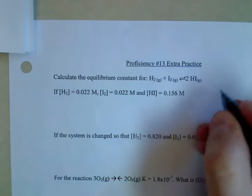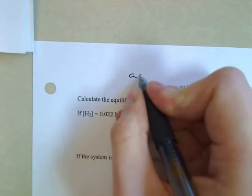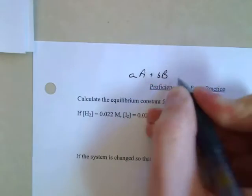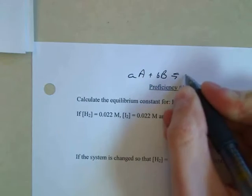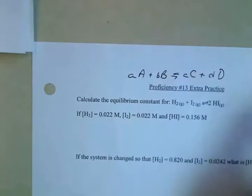So remember, let's write up here, for any equation A number of A's plus B number of B's gives you C number of C's plus D number of D's.